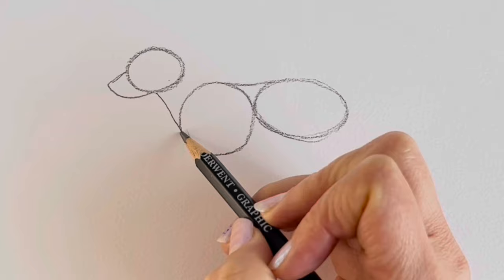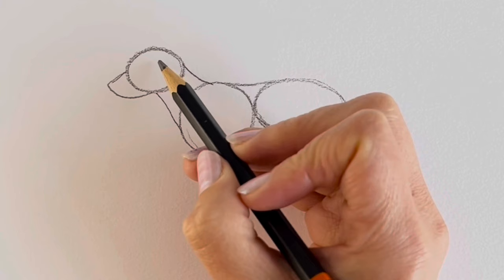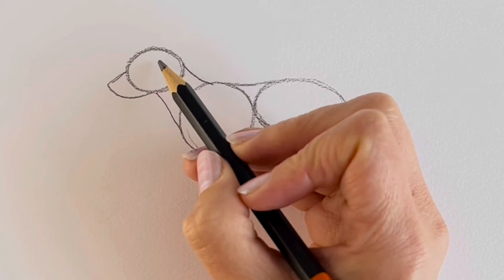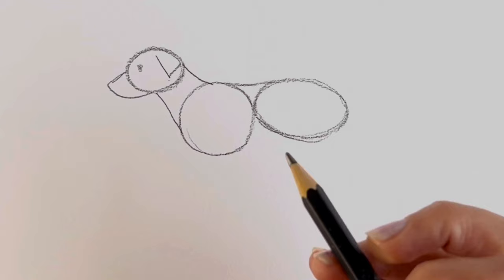Now for the neck which comes down like this and then the back of the neck which goes round like that. We're going to put in the ear, a simple V-shape just like that. Now for the eye, a little dot. That's not hard, is it?